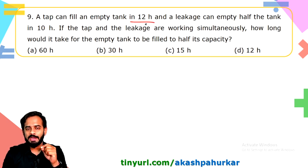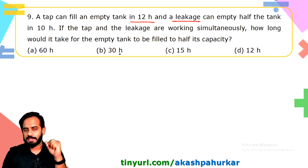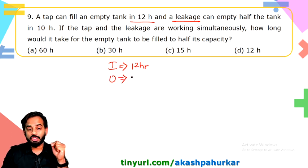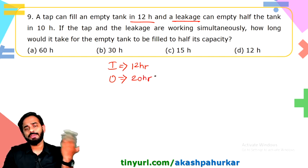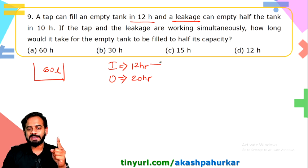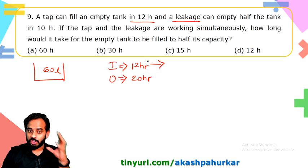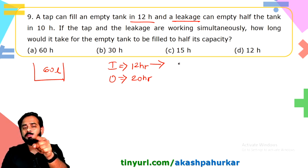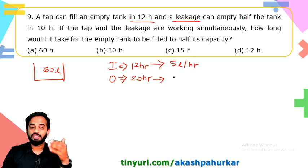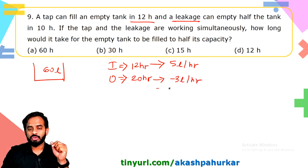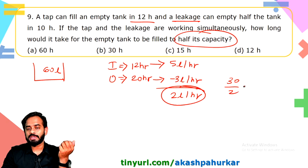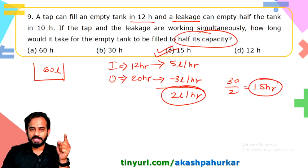A tap fills an empty tank in 12 hours; a leakage empties half the tank in 10 hours, so it empties the full tank in 20 hours. LCM of 12 and 20 is 60 liters (tank capacity). Inlet efficiency: 60/12 = 5 liters/hour; outlet efficiency: 60/20 = 3 liters/hour. Net combined rate = 2 liters/hour. Time to fill half the tank = 30/2 = 15 hours. Option C is correct.